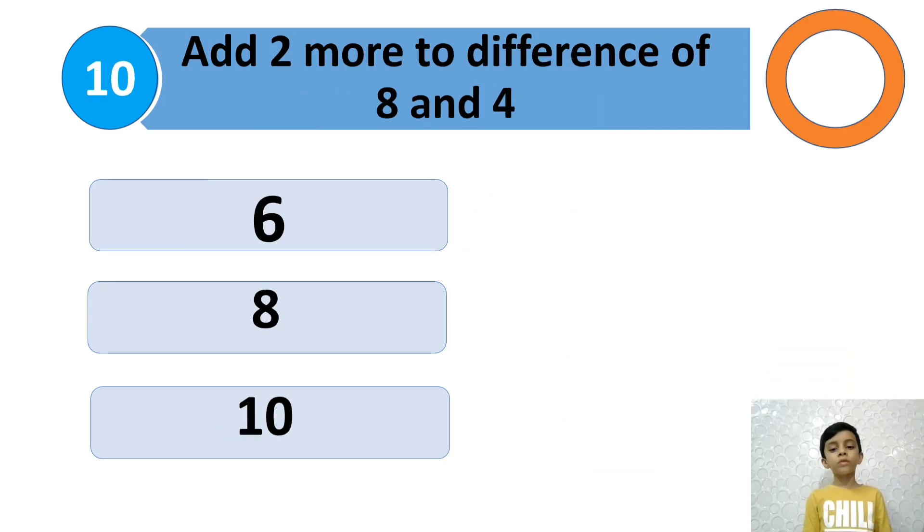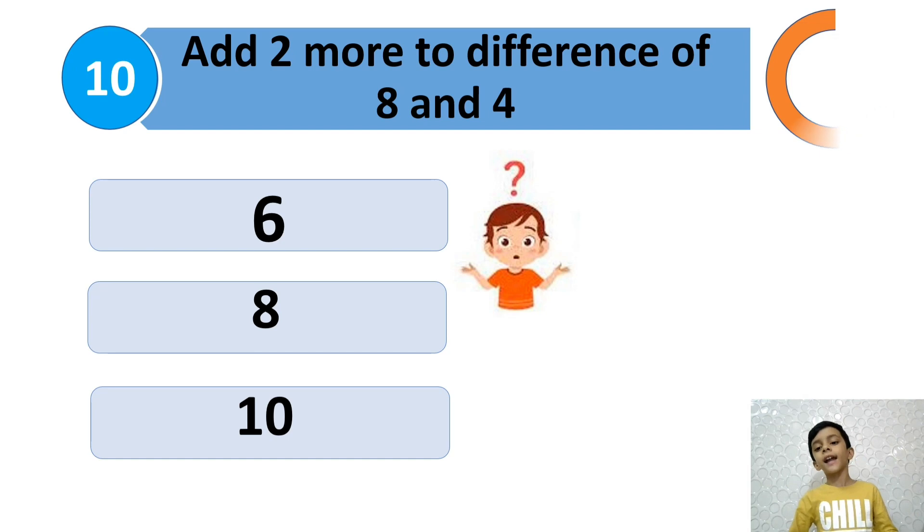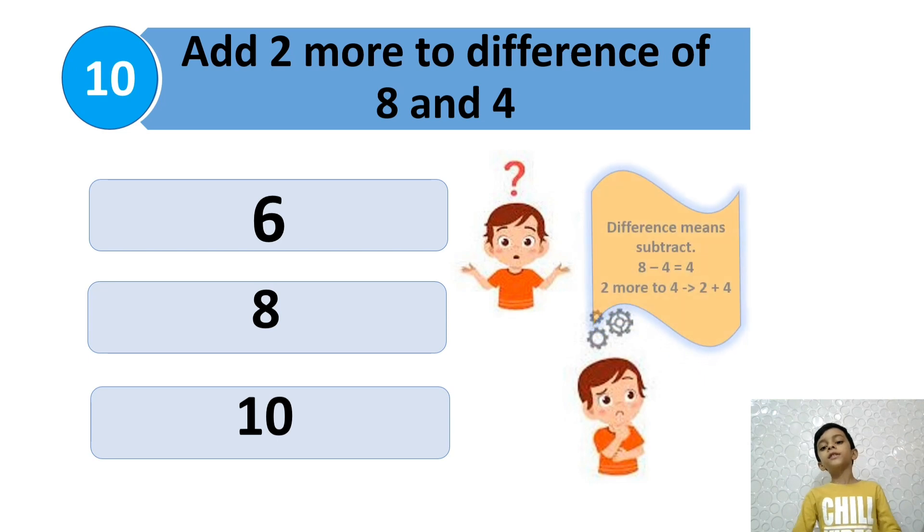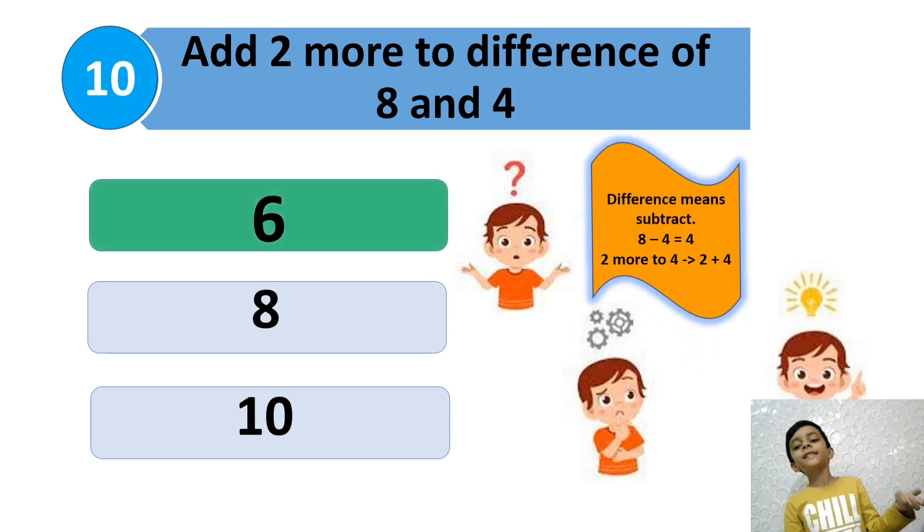Add 2 more to difference of 8 and 4! Difference means subtract! So we should subtract 8 and 4! 4 is the answer! Add 2 more to 4! So the real answer would be 6!